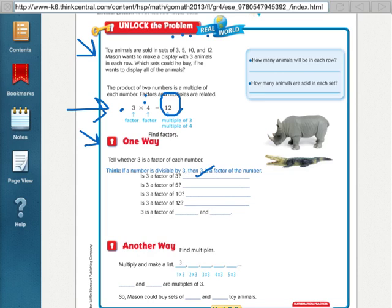The second one, is 3 a factor of 5? No, because when we count by 3's, we never say 5. So, he can't use a set of 5.